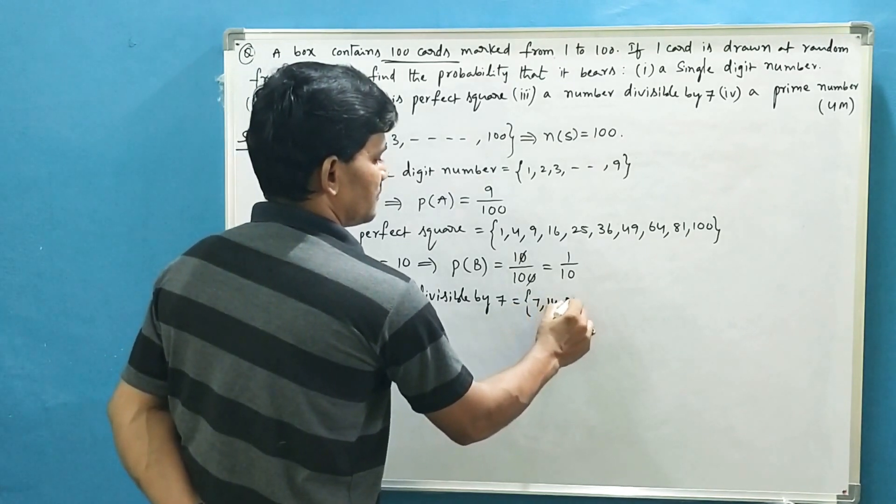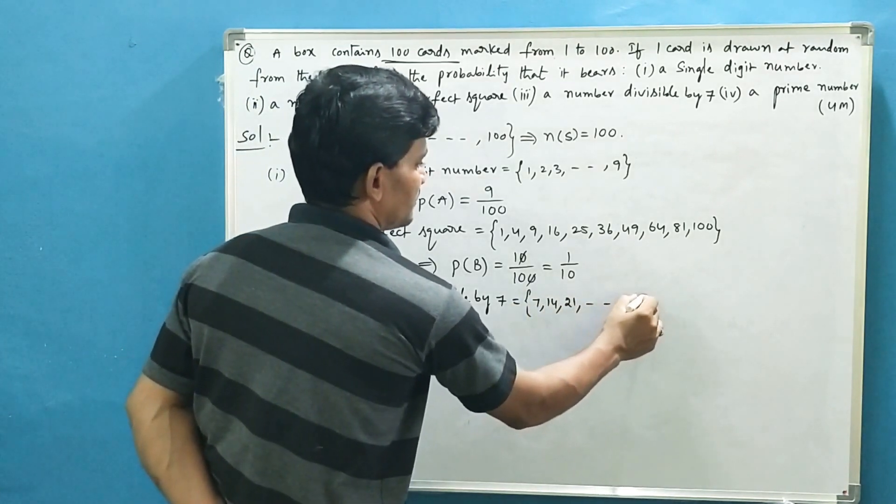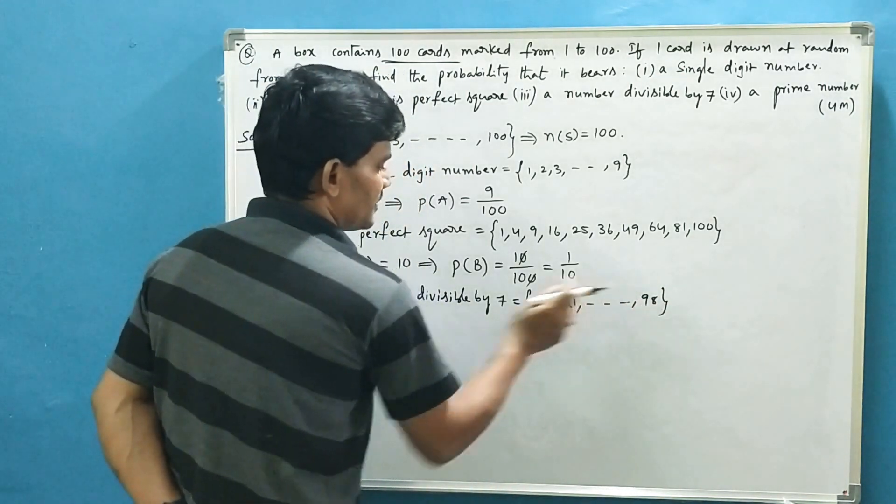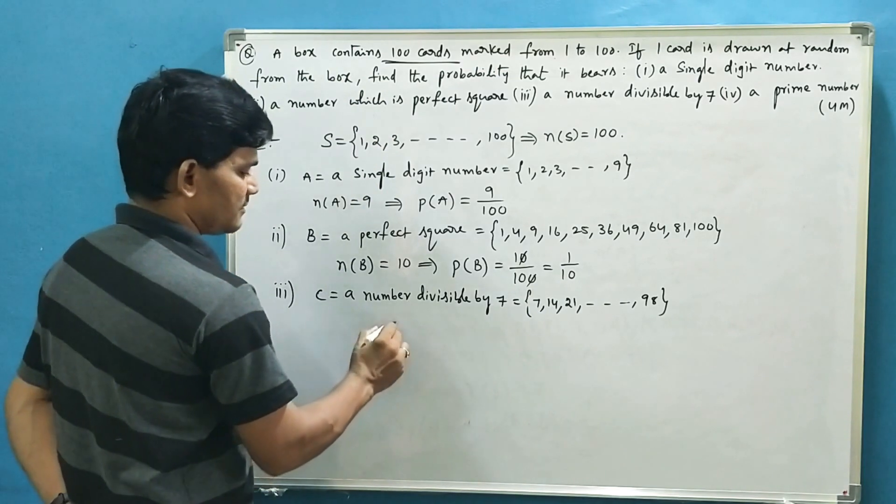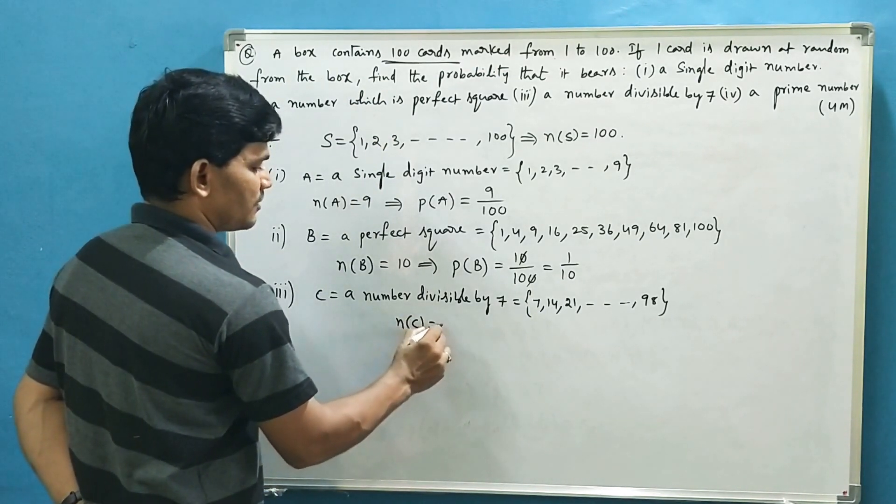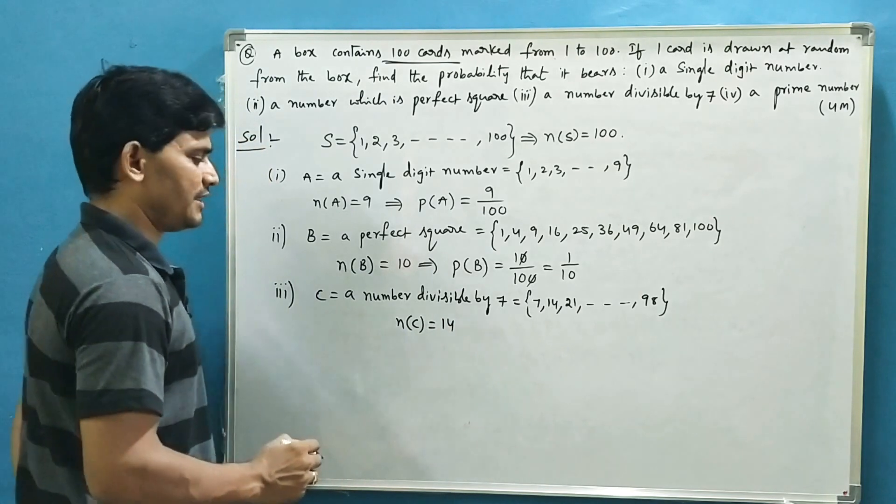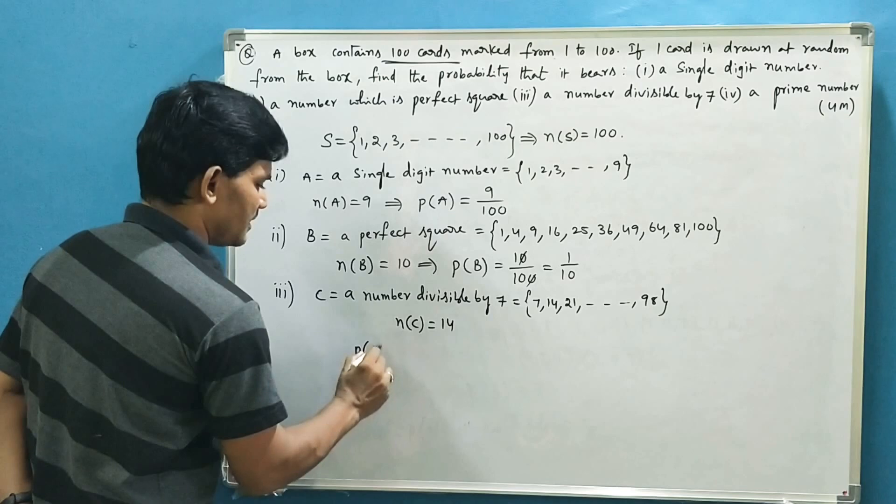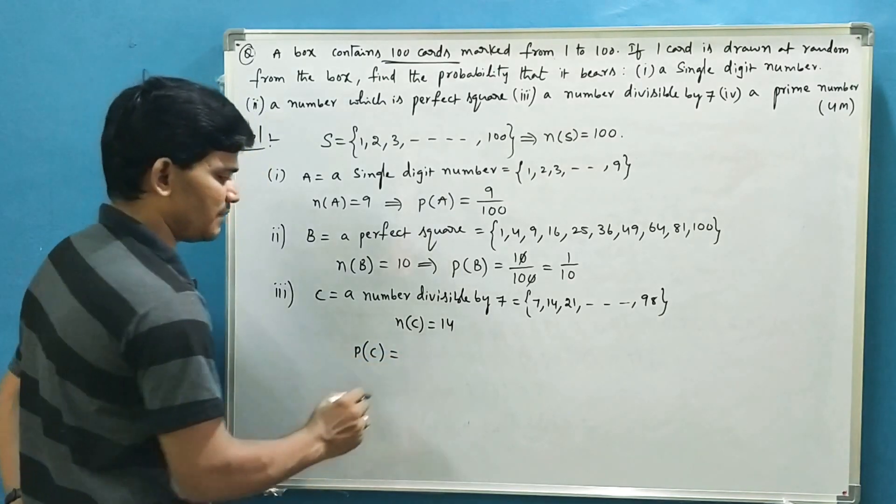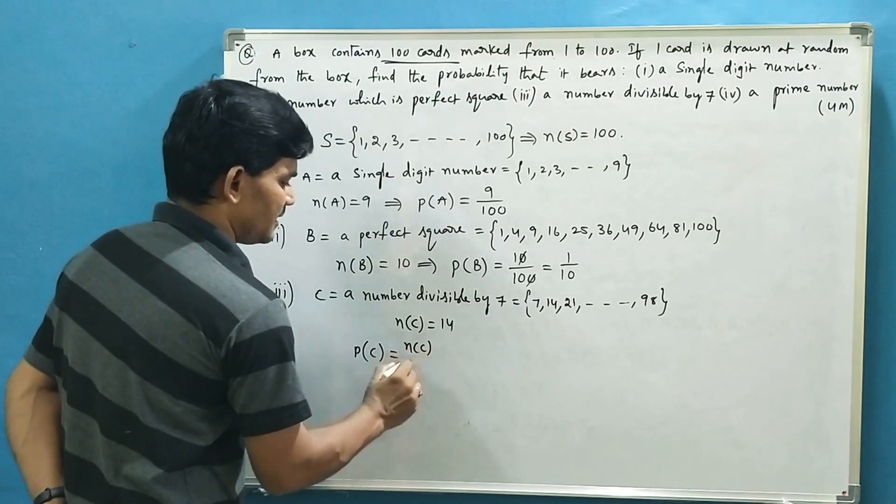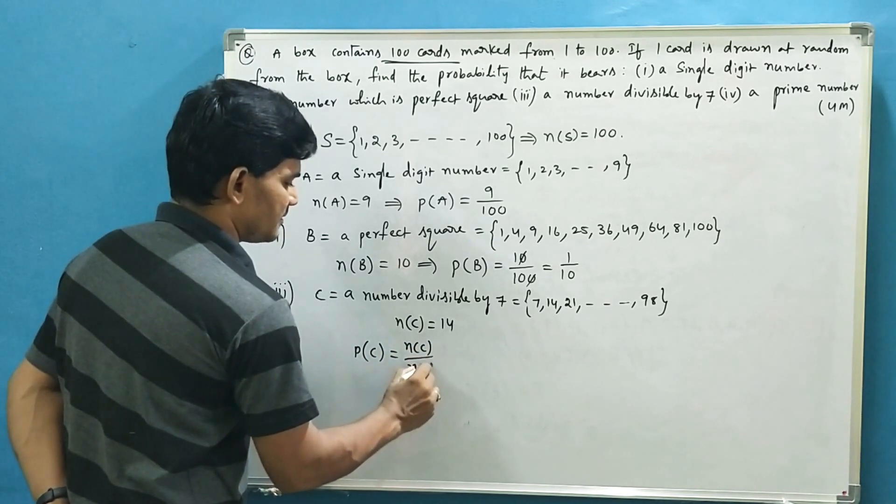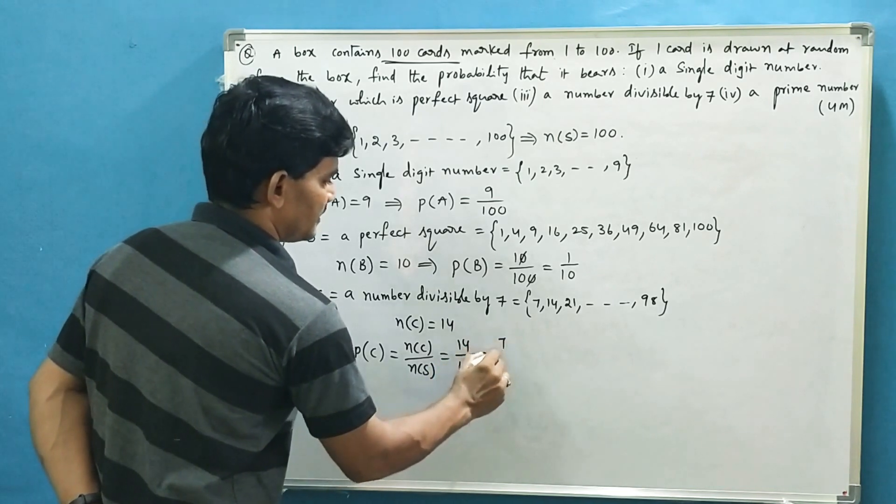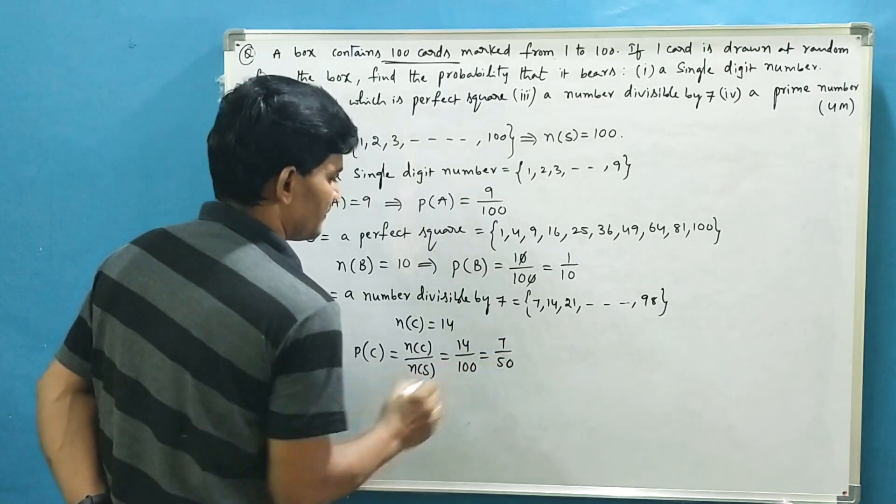The last one is 98, which means there are 14 multiples of 7. So number of favorable outcomes are 14. So probability of event C, that is a number divisible by 7, is n(C) by n(S), which is equal to 14 by 100, that is 7 by 50.